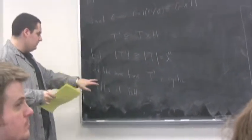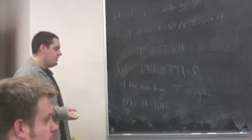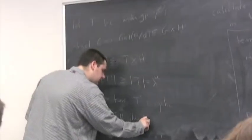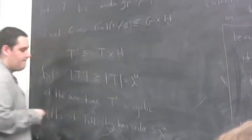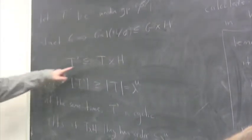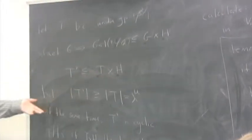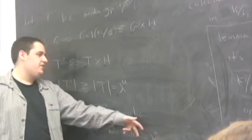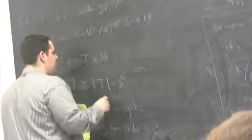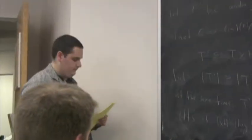So T prime has size at least lambda to the U. It's cyclic. But if I look at elements of T cross H they have order at most lambda to the U because T is a group of order lambda to the U. H is a group of order lambda to the U as well. Elements in their product have order at most lambda to the U. So I have a cyclic group its size is at least lambda to the U but every element has order at most lambda to the U. Well, those two facts together actually tell me that the size of T prime has to be lambda to the U.